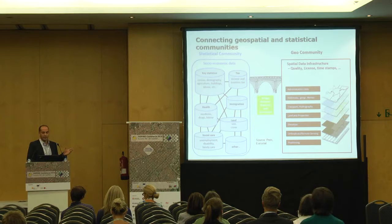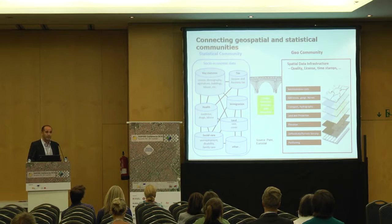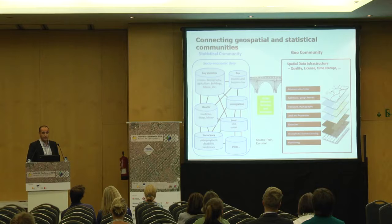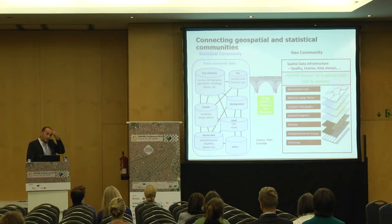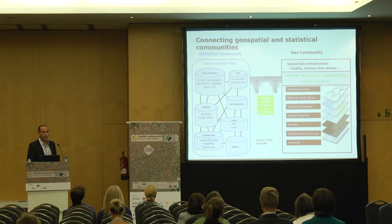This slide shows the views of the geo community and the statistical community. The geo community talks about spatial data infrastructure, quality, license issues, and provides reference information — administrative units, addresses, land and properties — on a layer-oriented level. The statistical community uses this reference data to produce socioeconomic data: key statistics, census information, immigration data. The connection between these communities is important. In Europe these bridges between the statistics and geo communities are established — in some countries very strong, in others they could be better.